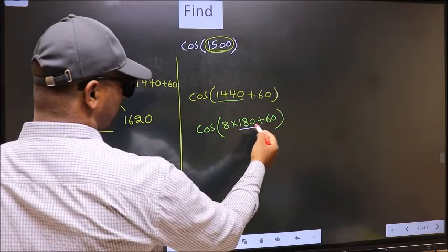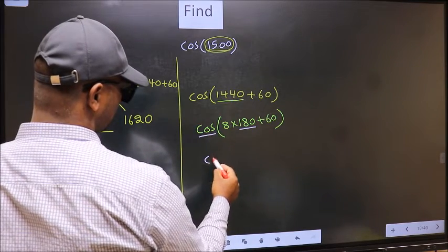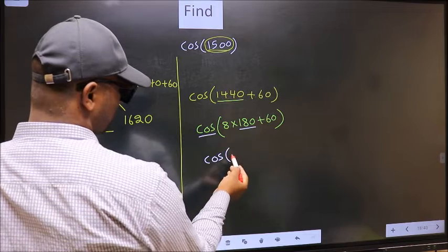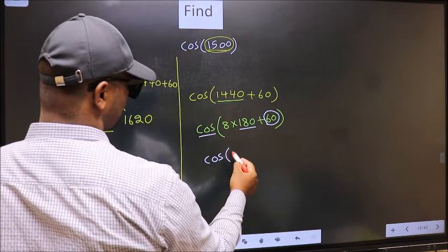Next, here we have 180. So cos is not going to change. It will remain cos. And inside, we get this angle 60.